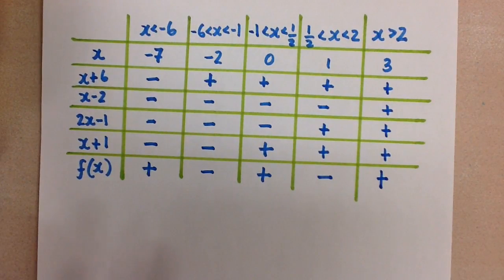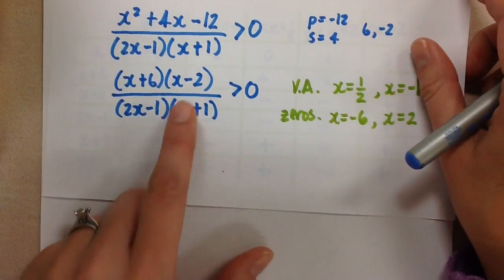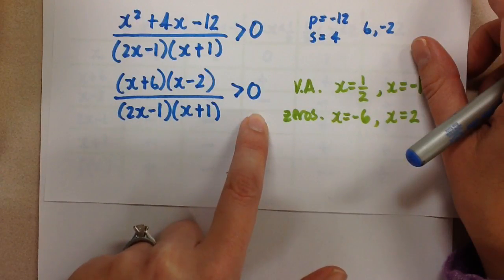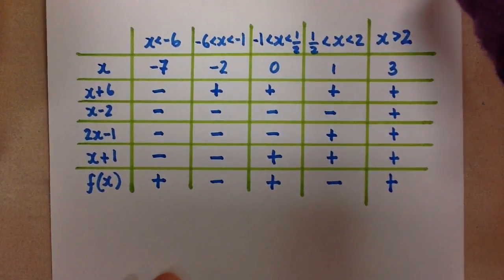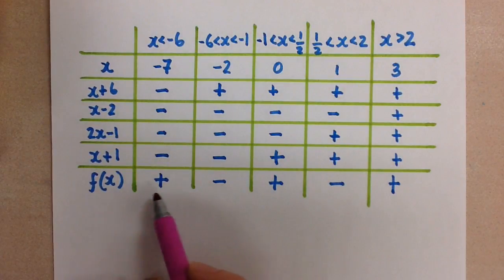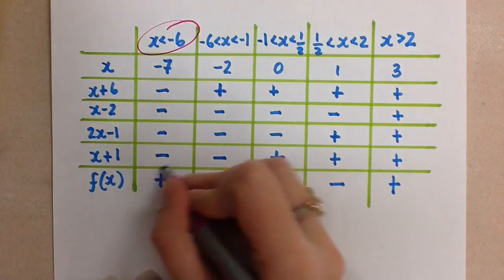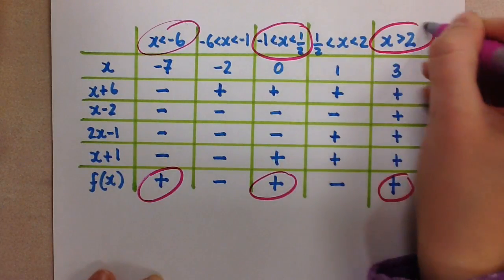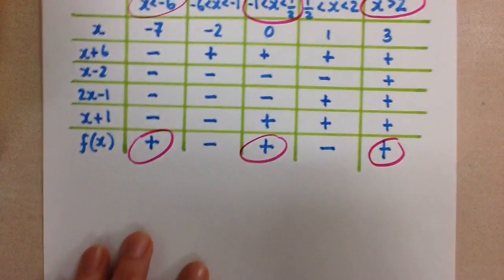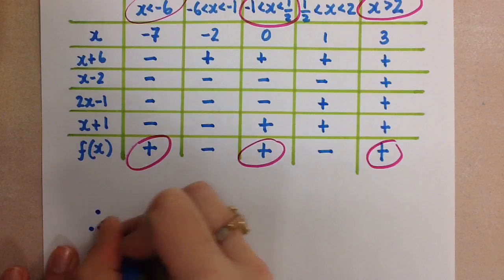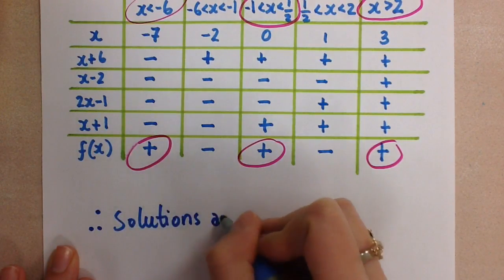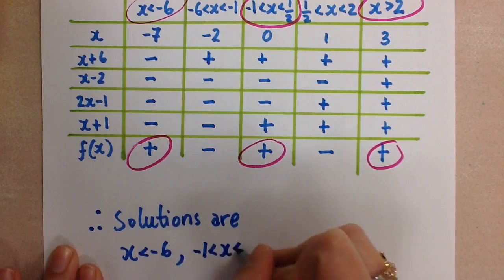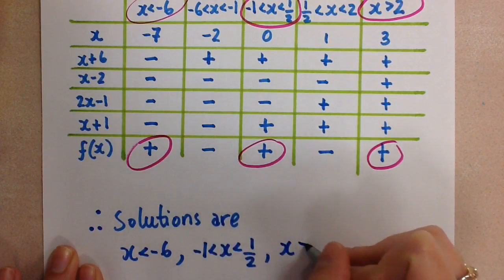Now we need to figure out which values satisfy the inequality. The inequality asks for when the function is greater than 0 — meaning when is the function positive. Looking at the chart, the function is positive in three intervals: x < −6, x between −1 and 1/2, and x > 2. So the solutions for the original inequality are x < −6, −1 < x < 1/2, and x > 2.